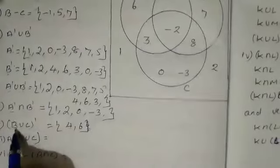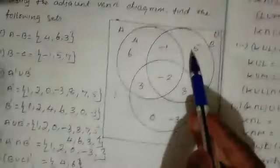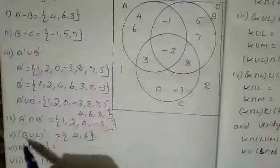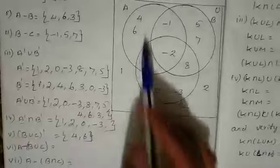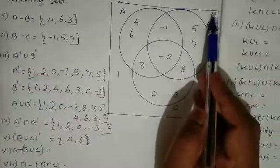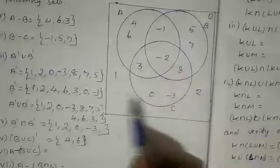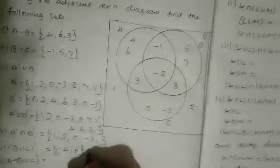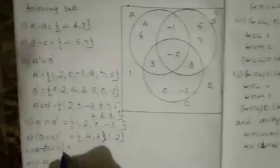Fifth question: (B union C)' — that is, B union C whole dash. First find B union C: combine set B and set C together. Then take the complement — from the universal set, subtract B union C. The remaining elements give us the answer.